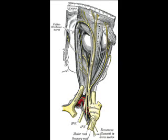Cranial nerves III, IV, and VI are usually tested together. The examiner typically instructs the patient to hold their head still and follow only with the eyes a finger or pen light that circumscribes a large H in front of the patient. By observing the eye movements and eyelids, the examiner is able to obtain more information about the extraocular muscles, the levator palpebrae superioris muscle, and cranial nerves III, IV, and VI.